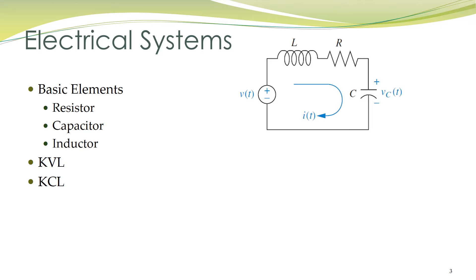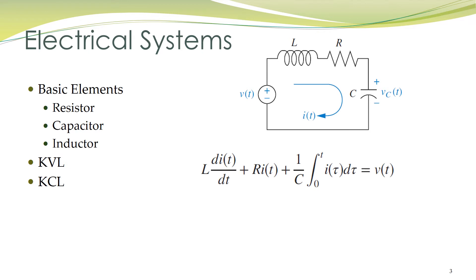Consider, for example, a series RLC network as shown in the figure. A mathematical model can be obtained by applying Kirchhoff's voltage law — that is, sum of voltage drops is equal to sum of voltage rises, which is written in this equation. The first term is the voltage across the inductor, the second term is voltage across the resistor, and the third term is voltage across the capacitor. The sum of these voltages is equal to the applied voltage V(t).